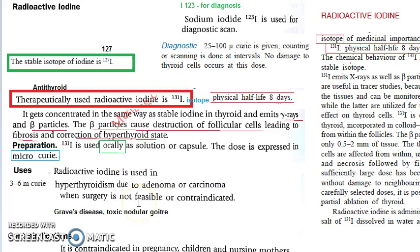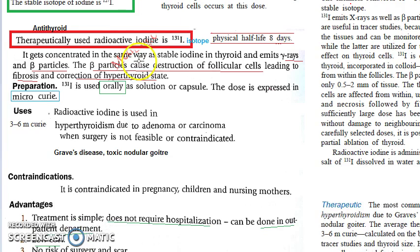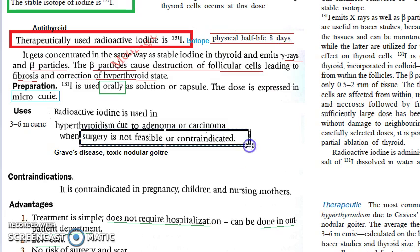So whenever surgery is not feasible or is contraindicated and there is a thyroid carcinoma or adenoma, you can destroy the thyroid with radioactive iodine. You can also use it when hyperthyroidism occurs in Graves' disease and toxic nodular goiter — but only when surgery is not possible. That is your main key here.